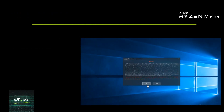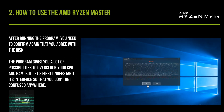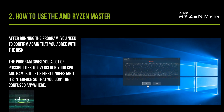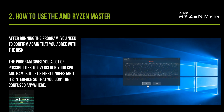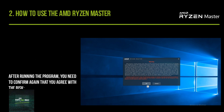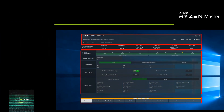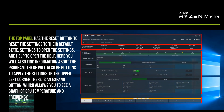How to use AMD Ryzen Master. After running the program, you need to confirm again that you agree with the risk. The program gives you a lot of possibilities to overclock your CPU and RAM, but let's first understand its interface so that you don't get confused. The top panel has the Reset button to reset the settings.